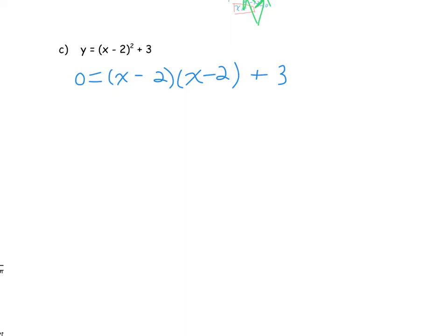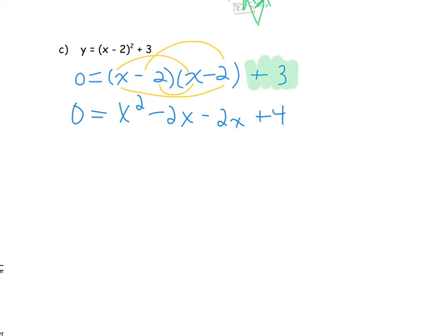Using the FOIL method — first, outside, inside, last: x times x gives x²; x times negative 2 gives negative 2x; negative 2 times x gives negative 2x; and negative 2 times negative 2 gives positive 4. Don't forget to add the plus 3 at the end. Simplifying gives x² minus 4x plus 7.